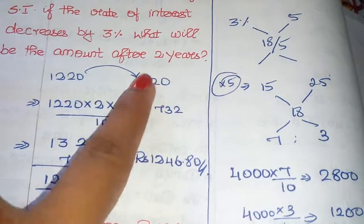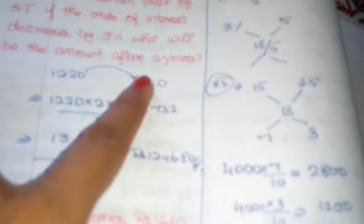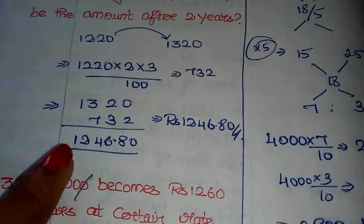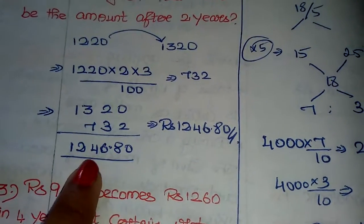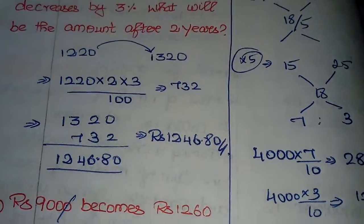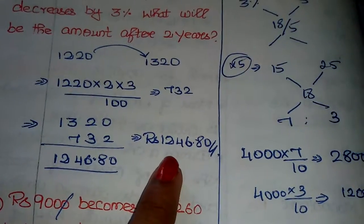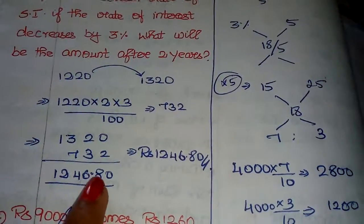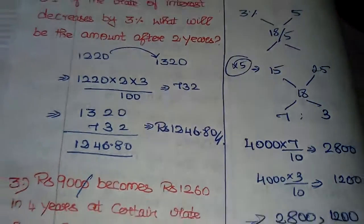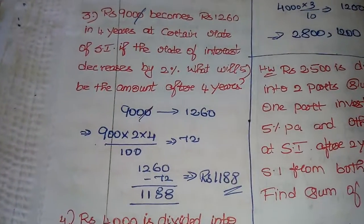The decrease in SI = ₹72. So the final value = 1,320 minus 72 = ₹1,246 (approximately). When the rate of interest decreases, the new amount comes to ₹1,246.